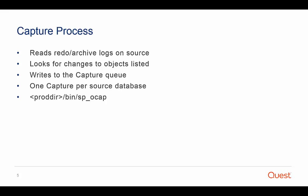The capture process reads the redo logs or archive logs on the source system for changes to the objects listed in the active configuration. Capture writes the data to the capture queue, where it accumulates until the next SharePlex process is ready for it. There is a separate capture process for each data source being replicated, each functioning concurrently and independently. The capture process is named SPOCAP and resides with the other SharePlex processes in the bin sub-directory of the SharePlex product directory.